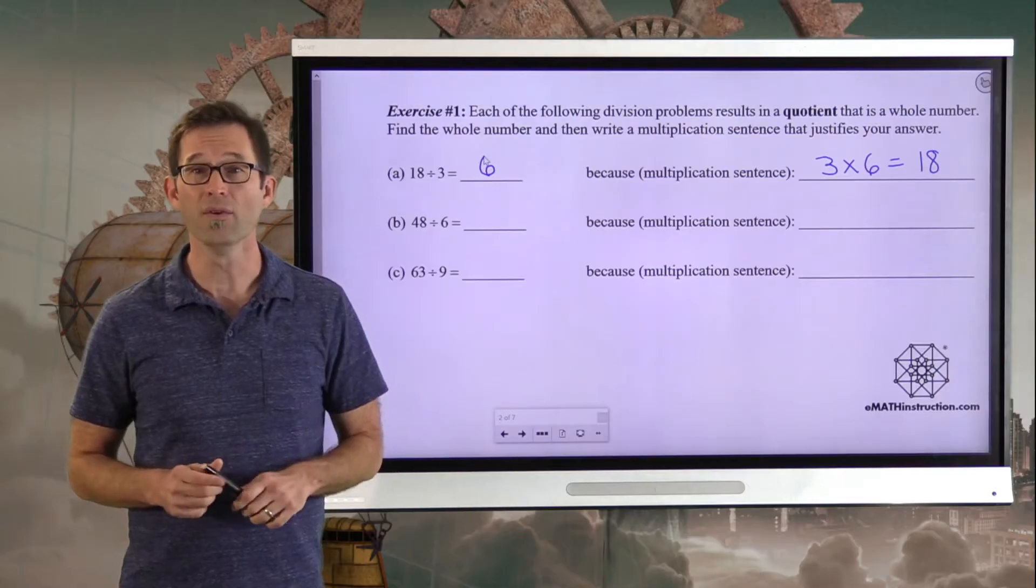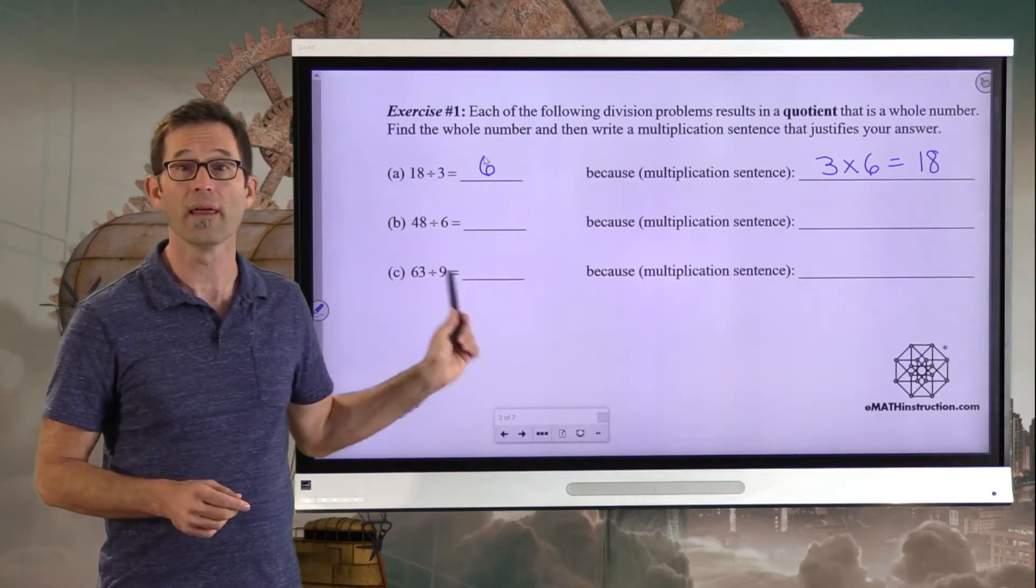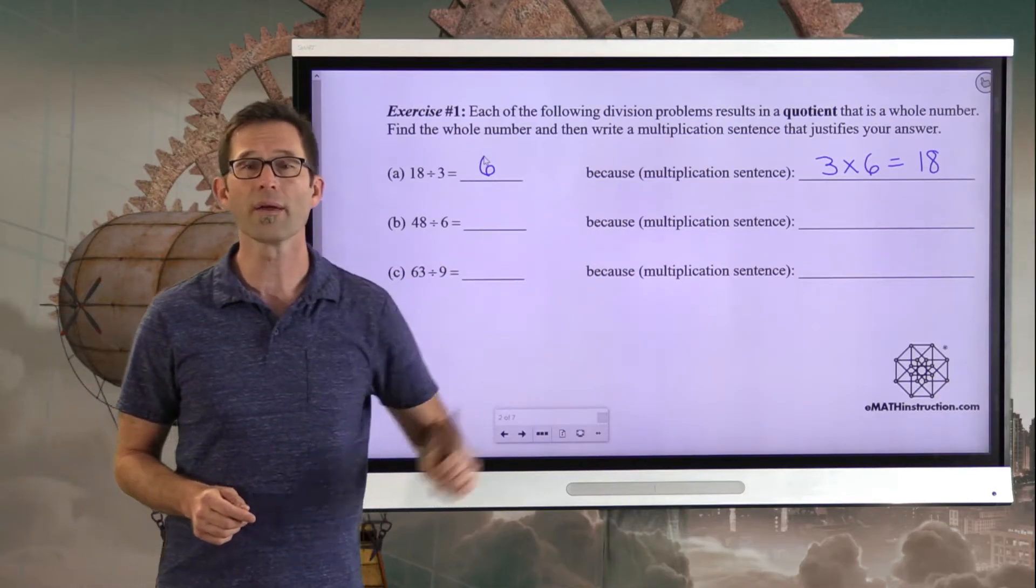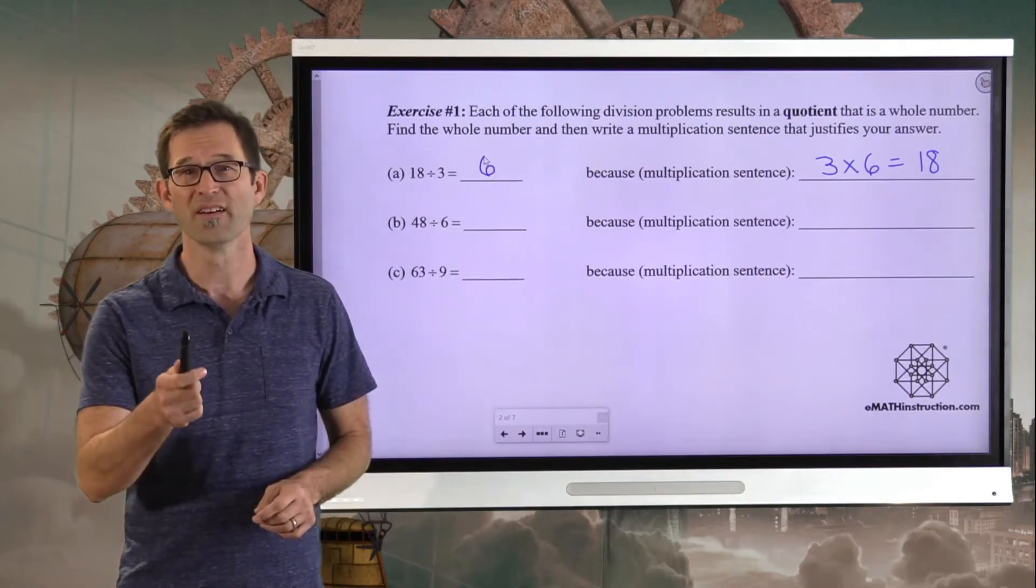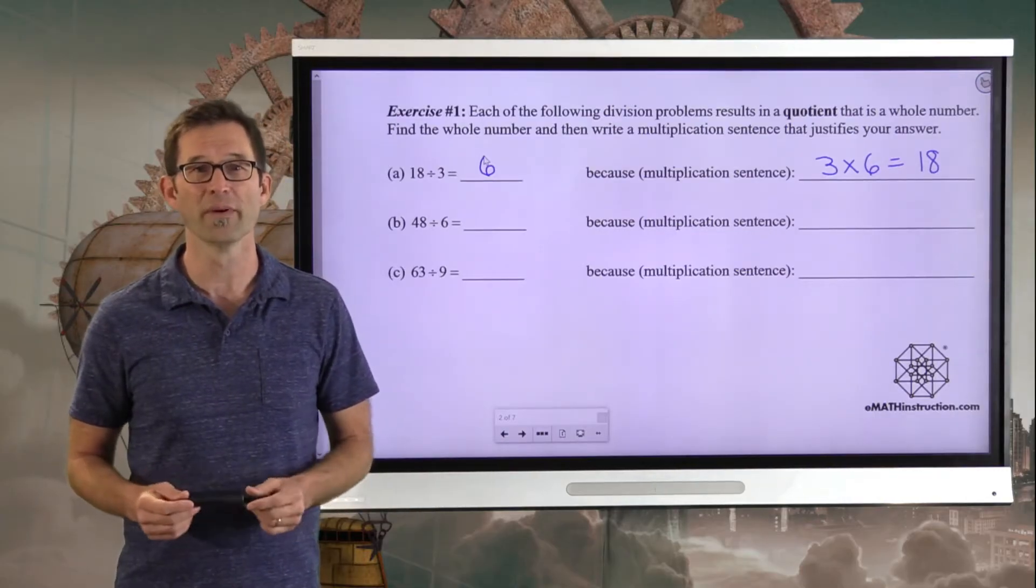Literally, I'm dividing up the 18 cookies. On the other hand, you could also say, hey, if I had 18 cookies and I wanted to put them in bags, each one of them holding 3 cookies, how many bags would I have? Well, in that case, I'd have 6 of them. So it's either, how many times does 3 go into 18? Or if I took 18 and broke it into 3 groups, how many things would be in each group? What I'd like you to do is do letter B and letter C, including writing out the multiplication sentence, and then we'll come right back to it. Pause the video now and take a little bit of time.